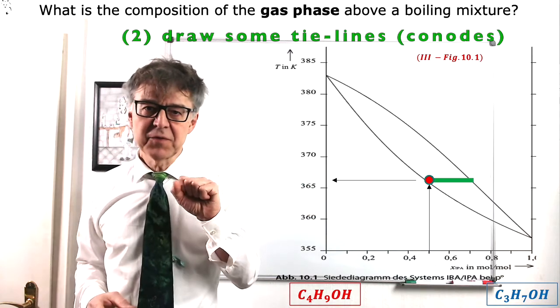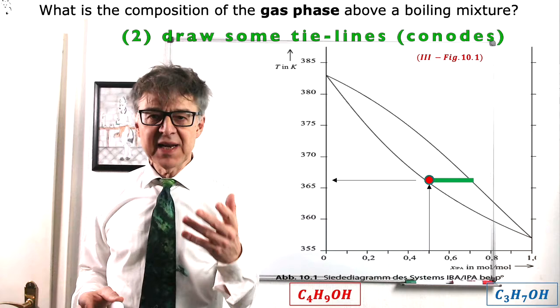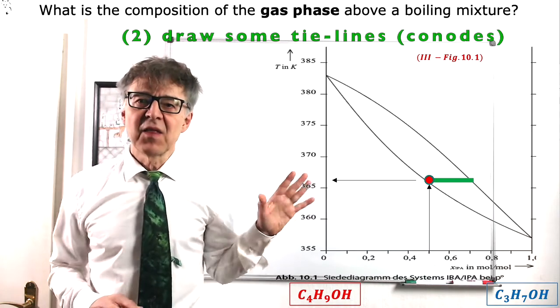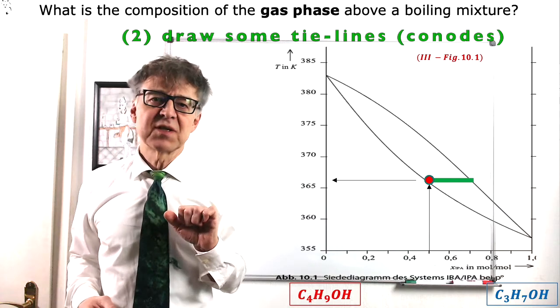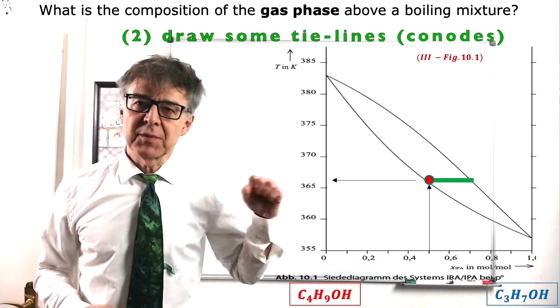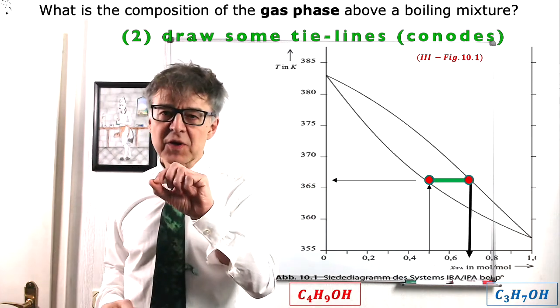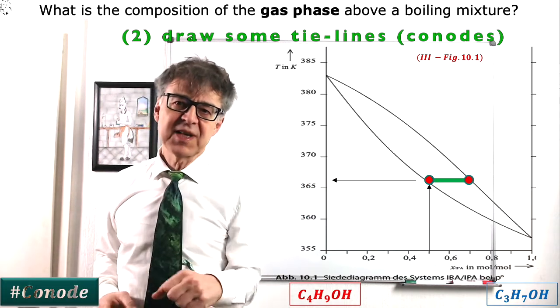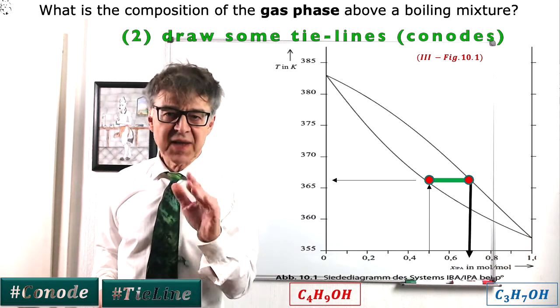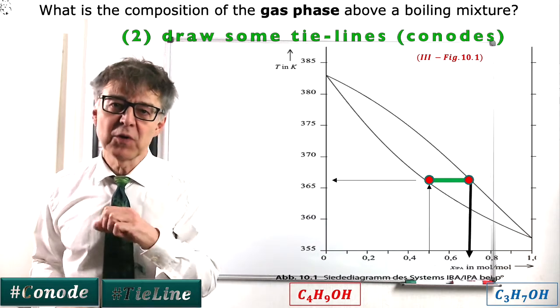Every horizontal line in the two-phase regions is in fact a tie line. Tie lines are always both isobars and isotherms. Let's draw a tie line through the two-phase region starting at the intersection of the isopleth with the boiling point curve. The intersection of the tie line with the dew point curve is at 0.7. That's the composition of the gas phase.